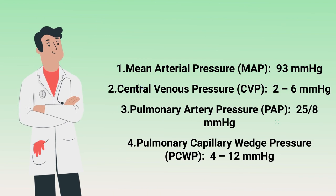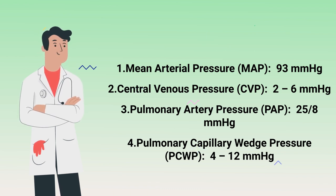Here are some examples: mean arterial pressure with a normal value of approximately 93, central venous pressure of 2 to 6, pulmonary artery pressure of 25 over 8, pulmonary capillary wedge pressure of 4 to 12.